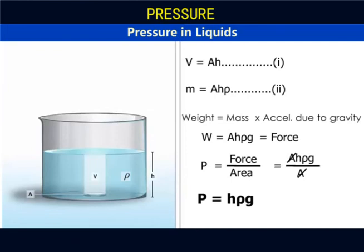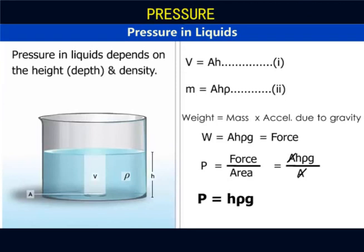For two different liquids, the variables are height and density. And so, unlike solids, pressure in liquids depends on the height of the liquid column and density of the liquid. The cross-sectional area does not matter. This formula is also used to calculate the pressure.